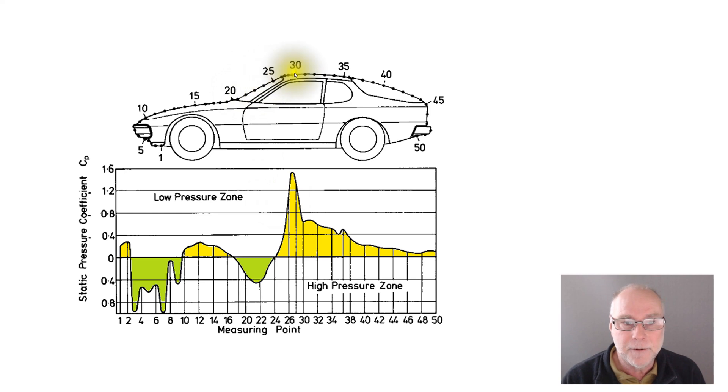And then, as the airflow flows over here, we're going to get pressures below atmospheric. There's the peak as the airflow wraps around the curve at the top of the windscreen or windshield. And there's the low pressure, all the way across the roof and back hatch.